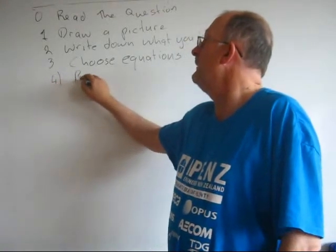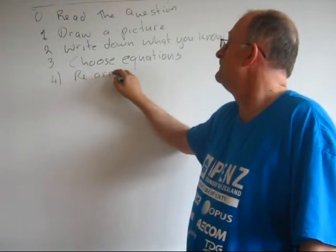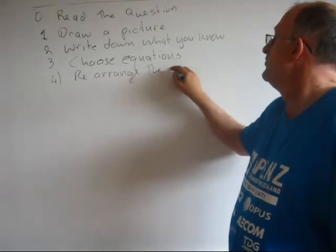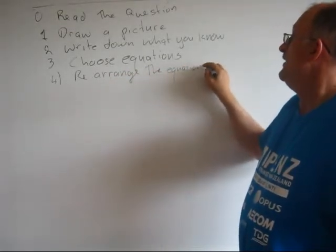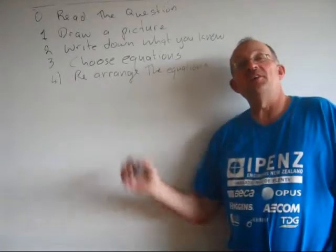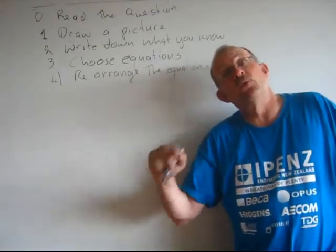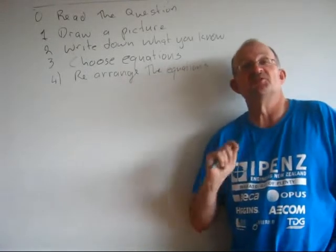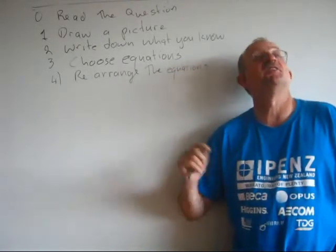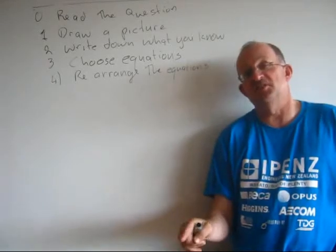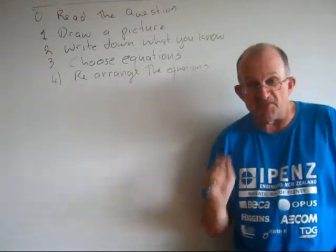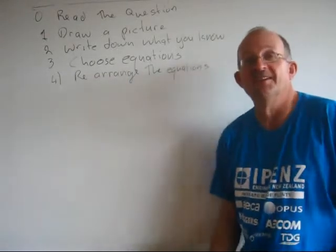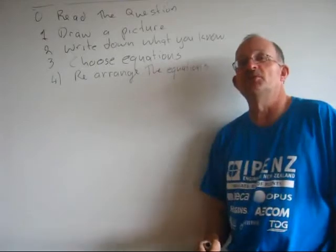Number four: Rearrange the equations. Notice that we rearrange the equations before we stick the numbers in. There's a lot of reasons for doing this. Remember, this is a physicist who teaches telling you this, not a teacher who does a bit of physics from time to time. This is actually a physicist telling you. Rearrange the equation before you stick the numbers in. It will make it easier for you in the long run.